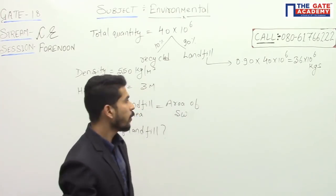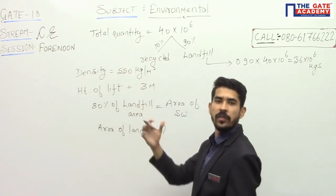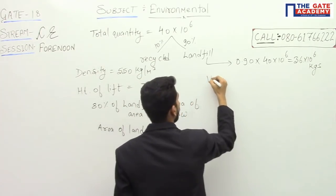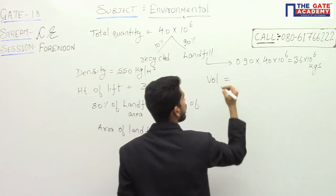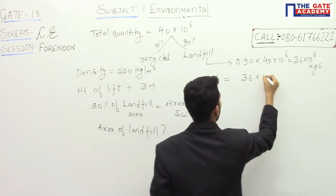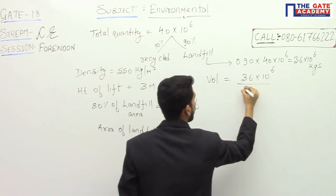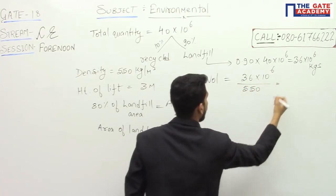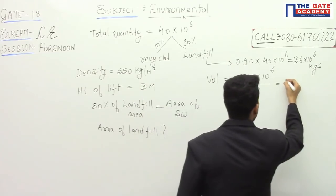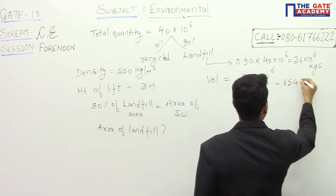Since the density is given, we can calculate the volume of this solid waste. Volume equals weight divided by density. The weight is 36×10⁶ kg and the density is 550 kg/m³, so the volume comes out to be 65,454 meter cubes.